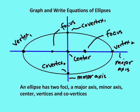First, we have the vertices, which are on the elongated portion of the ellipse. Then we have the foci, which are inside of the ellipse, also on the elongated portion of the ellipse, and that run along the major axis.